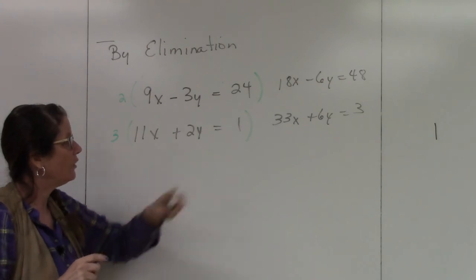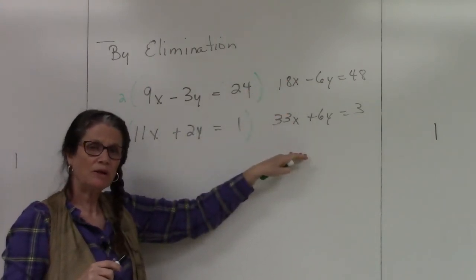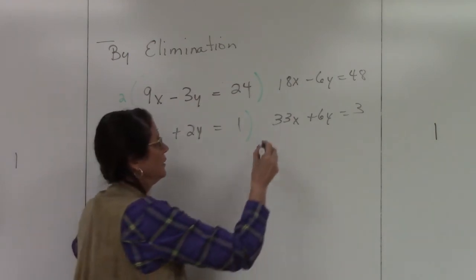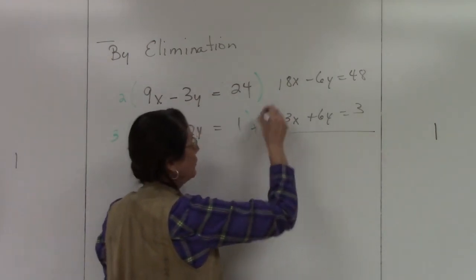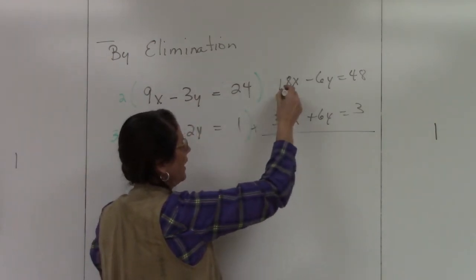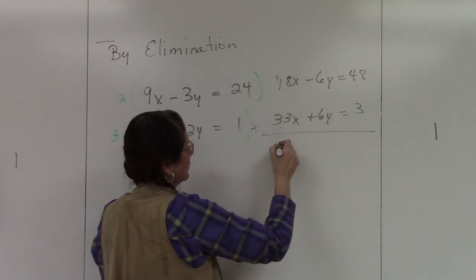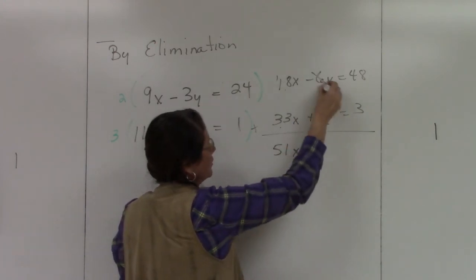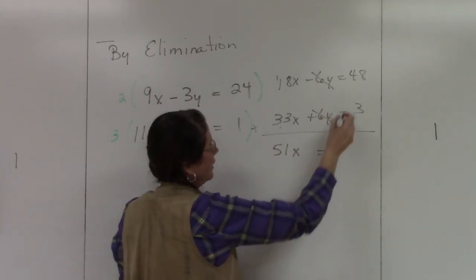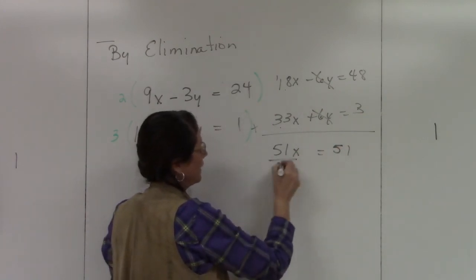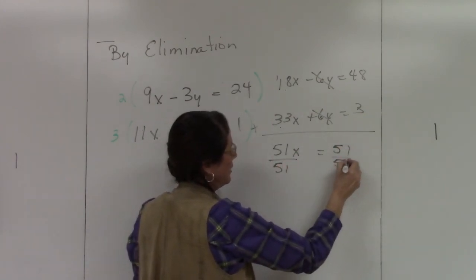And now I have a new system of equations. I have a negative 6y and a positive 6y. When I add these two systems, 18x and 33x I get 51x, my y's go away, and over here 48 plus 3 is also 51. And I'm going to divide both sides by 51, so my x equals 1.